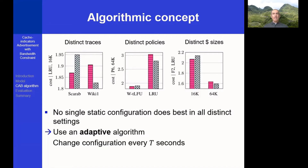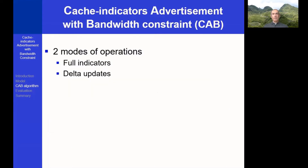Hence, we suggest using an adaptive algorithm that self-adjusts the configuration once in some t seconds. We now turn to detail our algorithm, CAD, standing for Cache Indicators Advertisement with bandwidth constraints. Our algorithm is composed of two modes of operation, namely Full Indicators and Delta Updates.